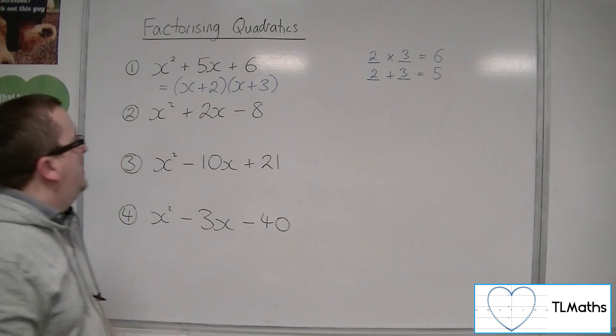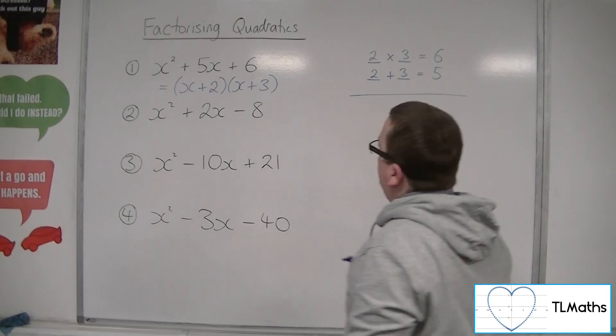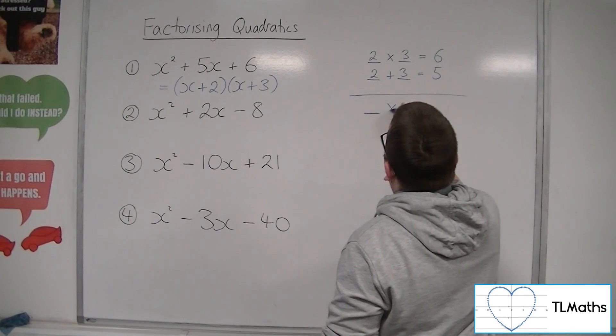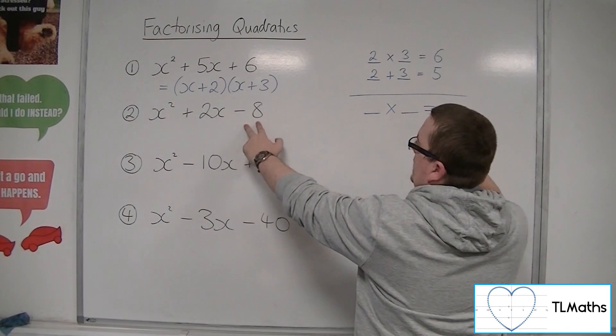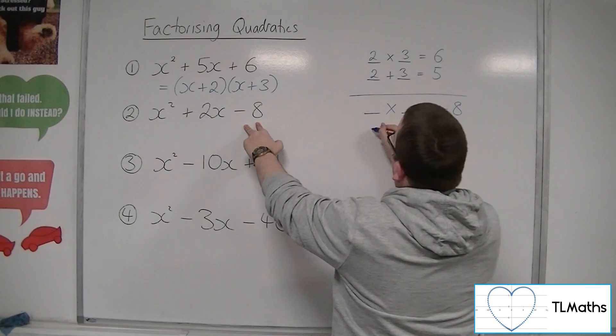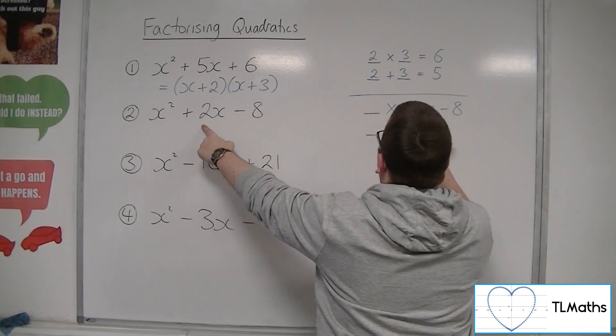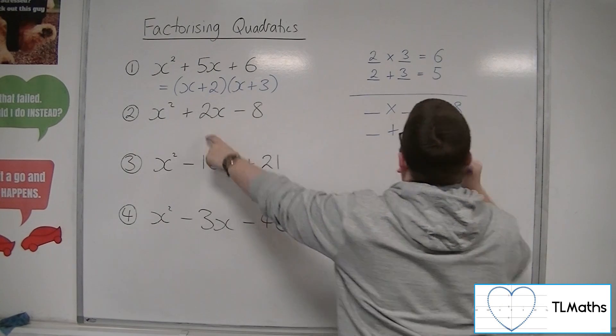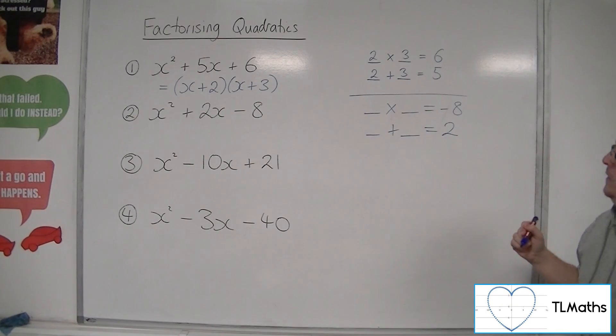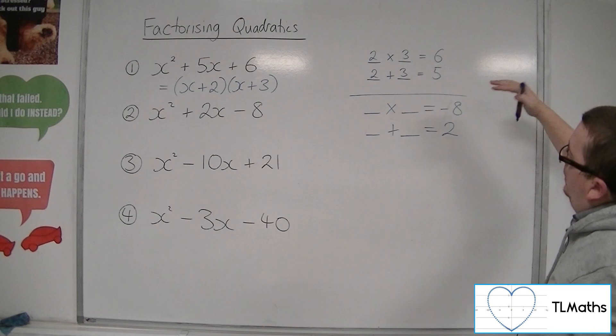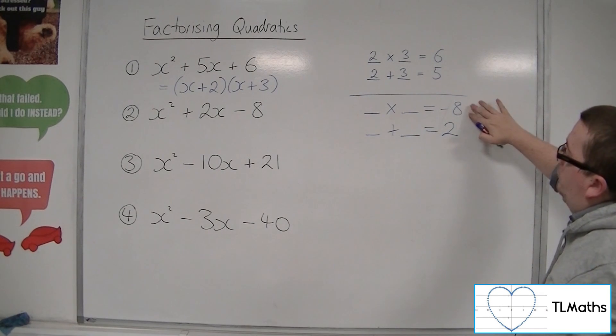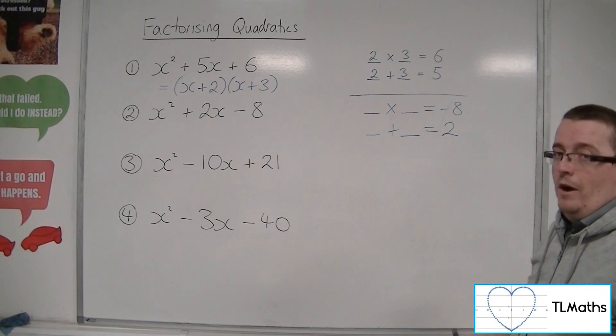So let's have a look at number 2. This time we're trying to find two numbers that multiply together to make minus 8. What you can do here is go through different examples of what you could multiply to get minus 8.